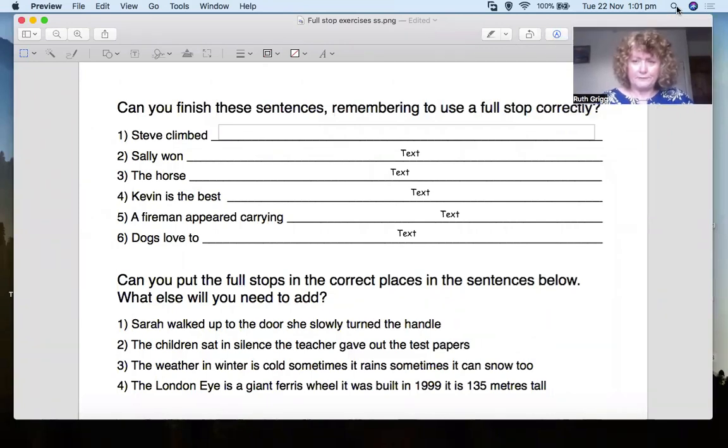So let's see if we can finish these sentences, shall we, with a full stop. Stephen climbed. Let's see, what could we put there? Stephen climbed to the top of the hill. And he felt exhausted. I've got a comma there. I don't want that comma there, do I? What do I want? Full stop.